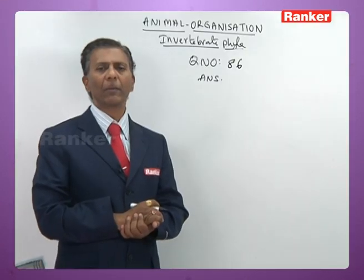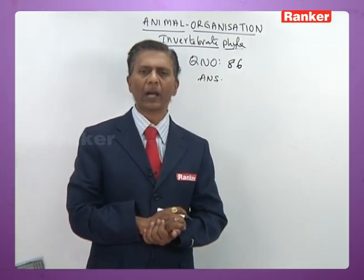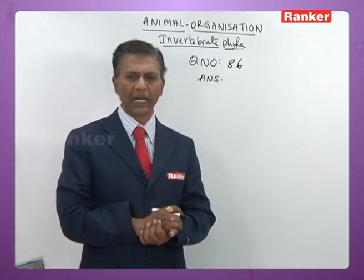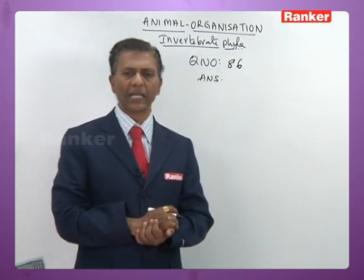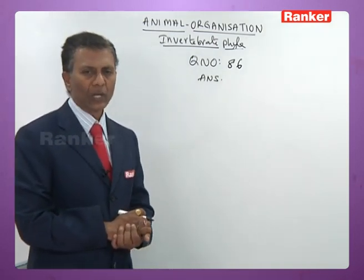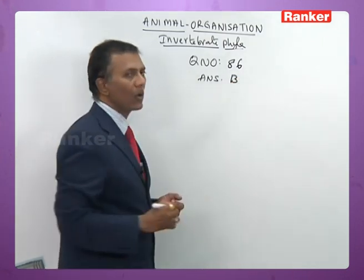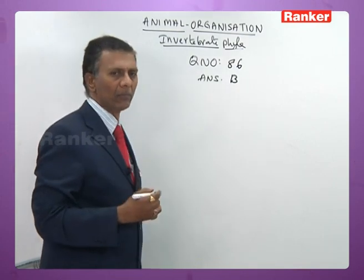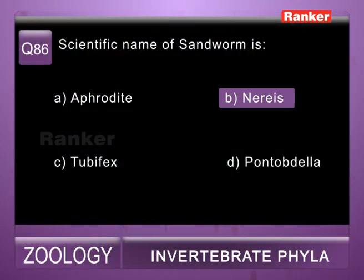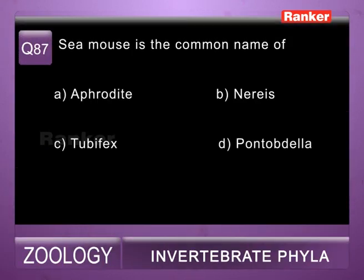Question eighty-six: scientific name of sandworm — a) Aphrodite (sea mouse), b) Nereis (ragworm, sandworm, or clamworm), c) Tubifex (blood worm), d) Pontobdella (skate sucker). Nereis is commonly called sandworm, ragworm, or clamworm. So eighty-sixth question correct answer is b) Nereis.